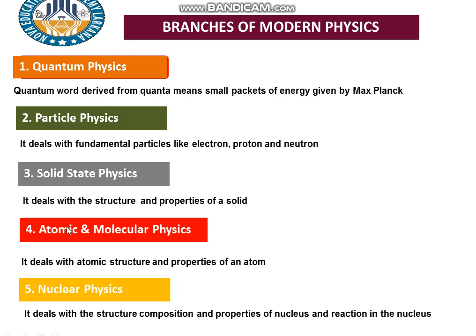The fourth branch is atomic and molecular physics. It deals with the structure and properties of an atom. An atom is a small particle — it has a structure with a nucleus at the center. Inside the nucleus there are protons and neutrons, and around the nucleus electrons revolve. That is the structure of an atom.